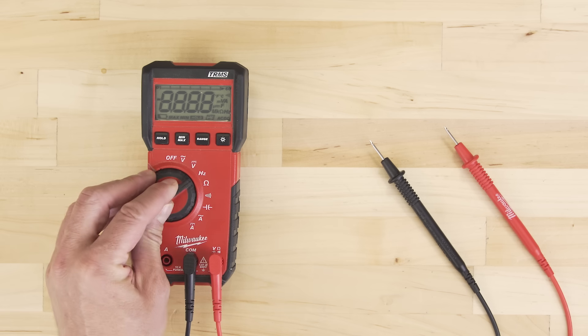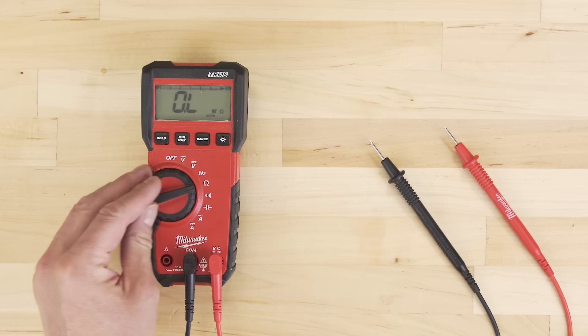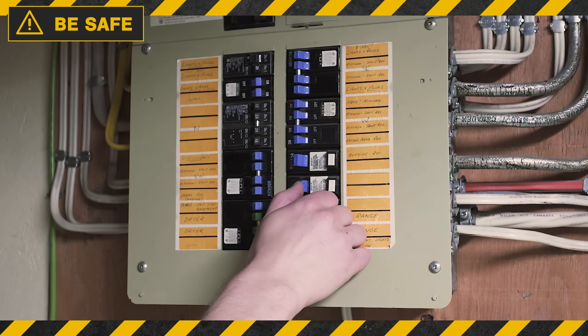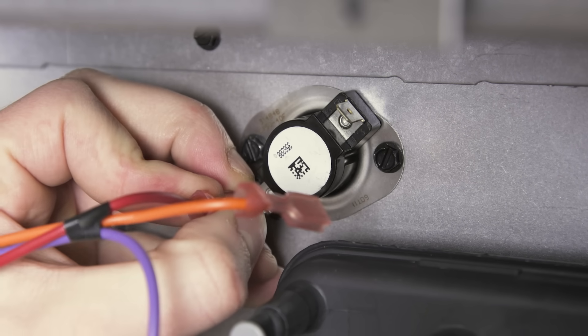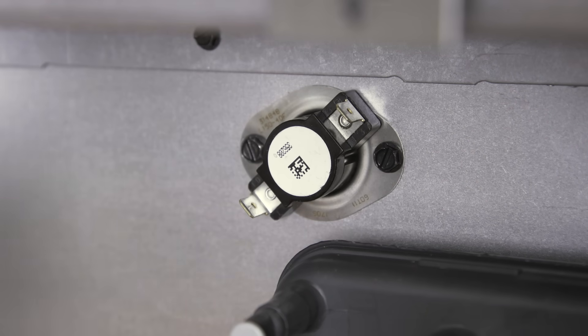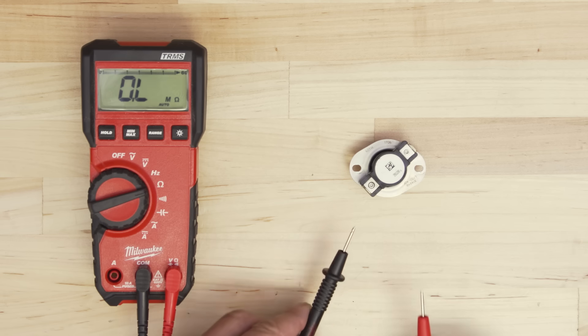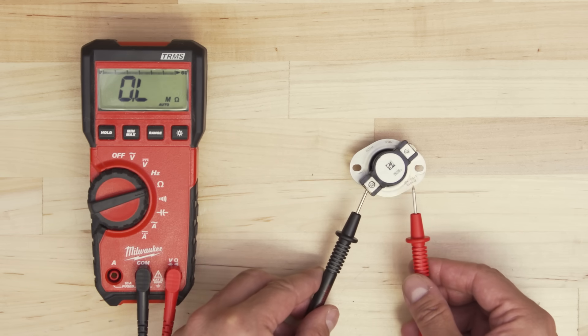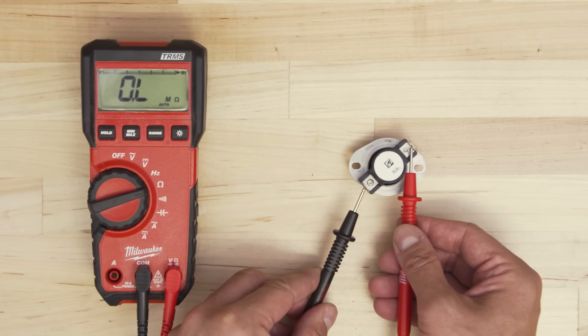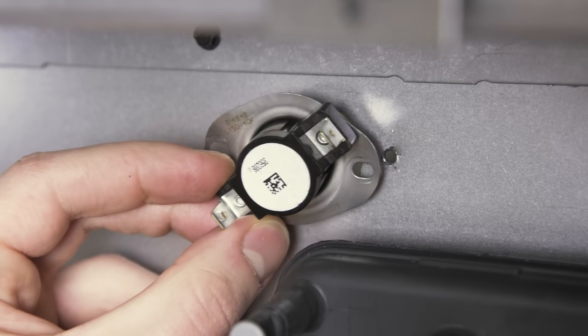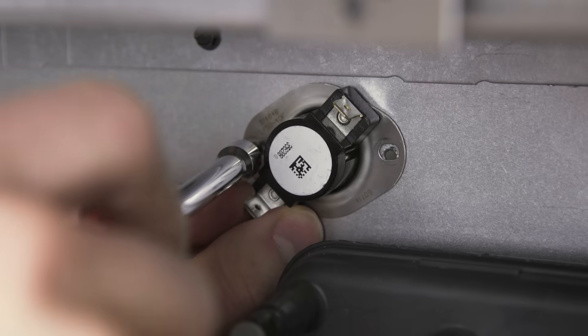To test a component for continuity, first set the multimeter to the ohms or resistance with tone setting. Safely disconnect the power, and remove the wires or connectors. Now remove the component or isolate it. Next, touch each probe to each component terminal. If there is no continuity, then the multimeter will display OL, or open loop. This means the component will need to be replaced.